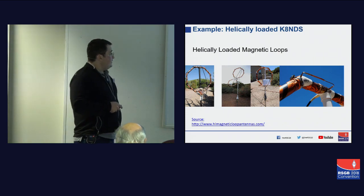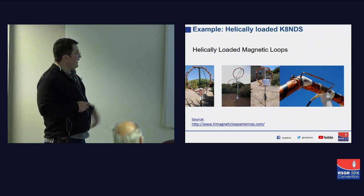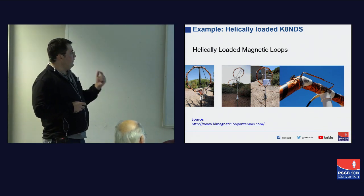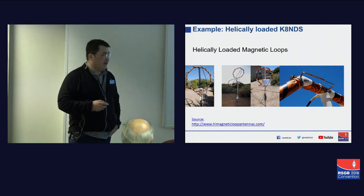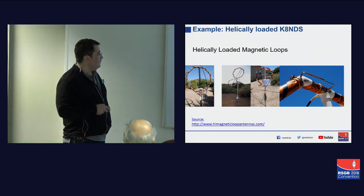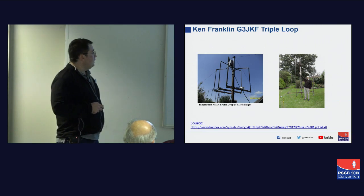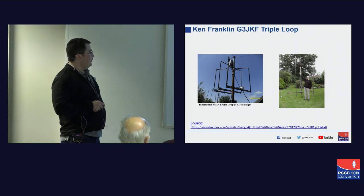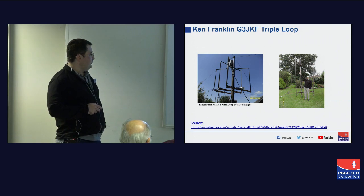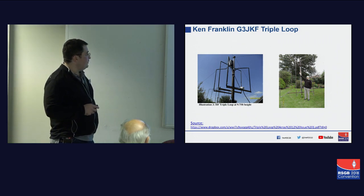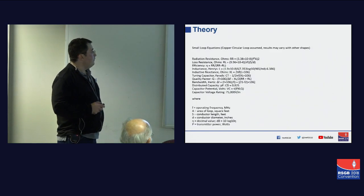Rich K8NDS has got what he calls his helically-loaded magnetic loops — same idea, using copper cladding around a plastic former. There's a link to the site if you want to construct something similar; he's using a gamma match to feed. Ken Franklin has built an array of loops — a triple loop — which he's had some pretty good performance from. Again, a link to his material for your benefit.